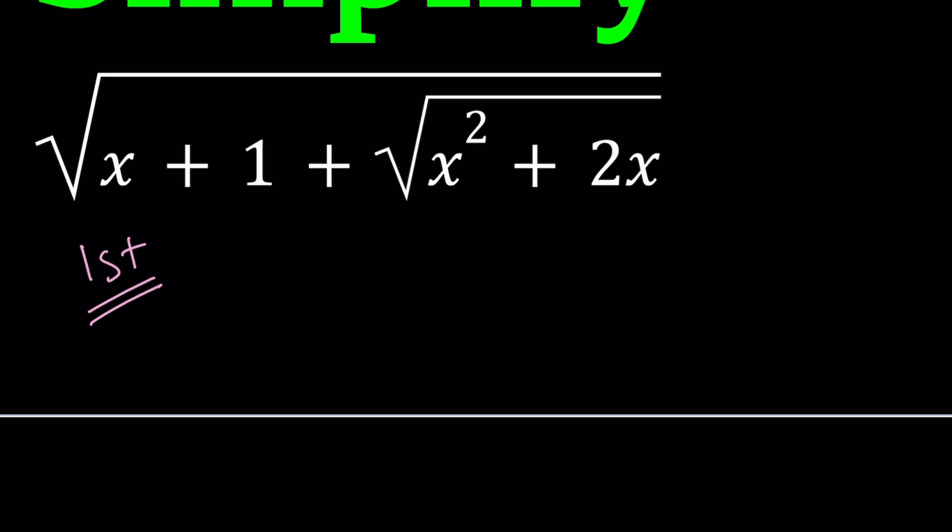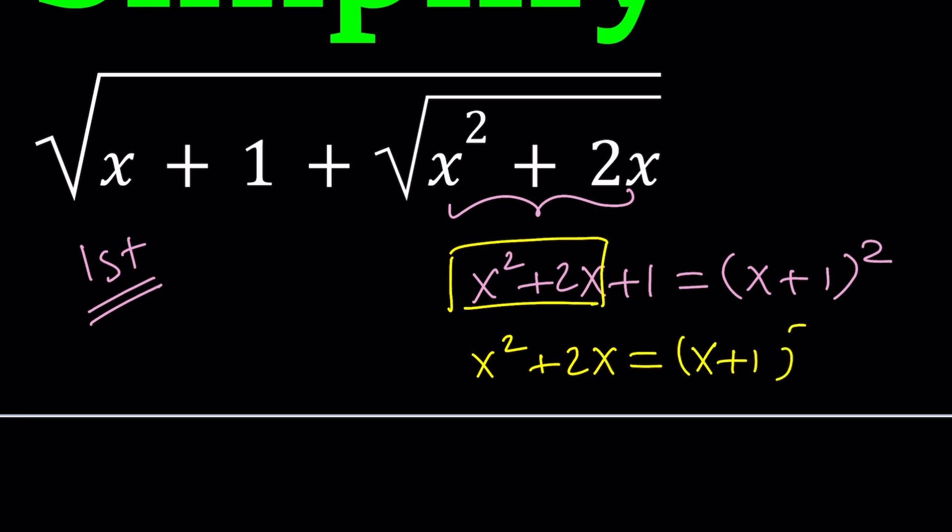Notice that this expression is 1 less than a perfect square. Have you noticed that? Because x squared plus 2x plus 1 is x plus 1 quantity squared. Therefore, it's a perfect square. So this part can actually be written as 1 less than a perfect square. In other words, we can write x squared plus 2x as x plus 1 squared minus 1.